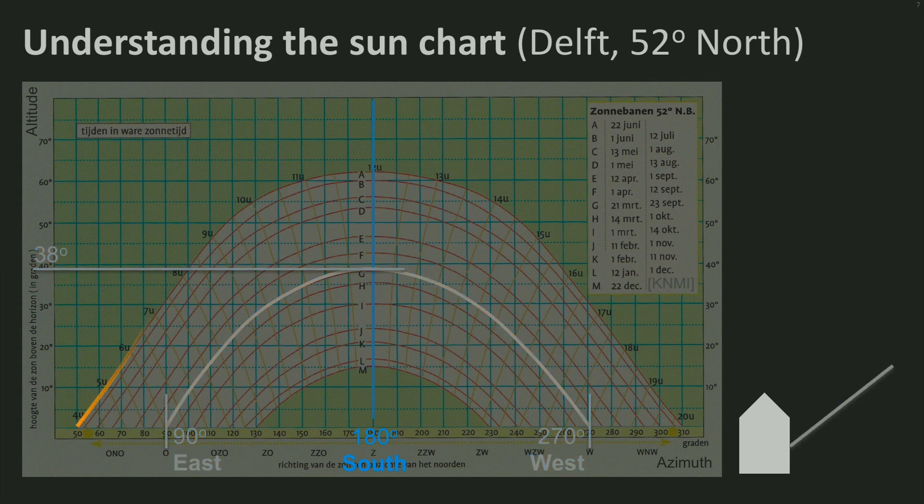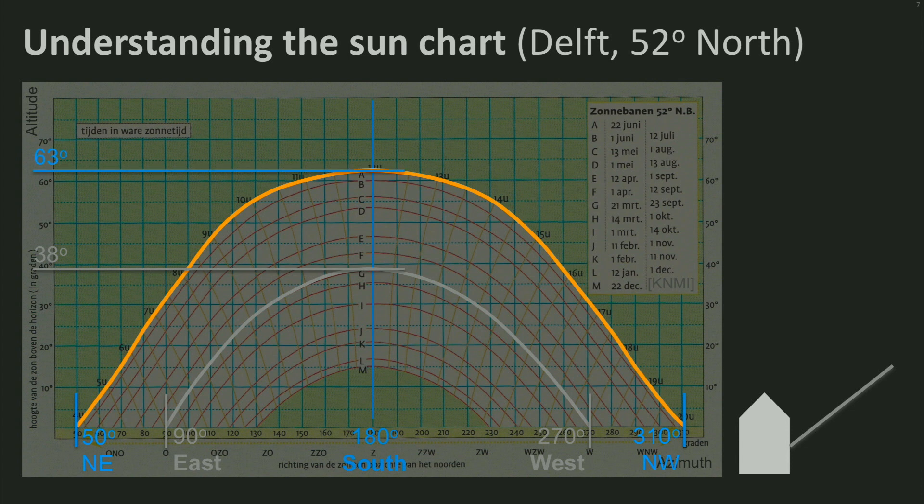In summer, on 21st of June exactly, this is the track of the sun through the sky. From around 50 degrees of azimuth, north-east, to 310 degrees north-west. At midday, the sun reaches the highest altitude of the year, 63 degrees. And it reaches the house at this angle.